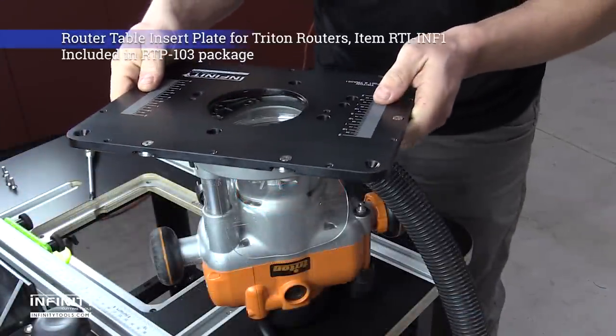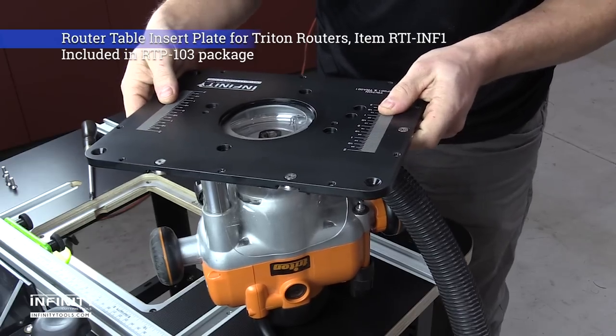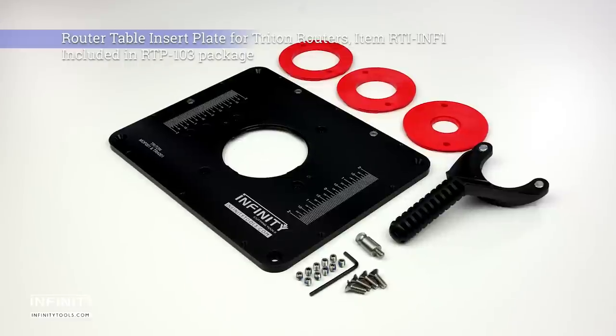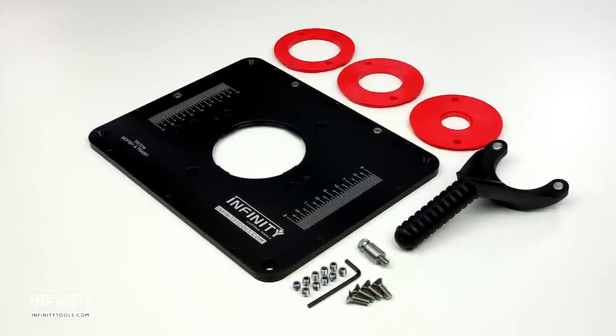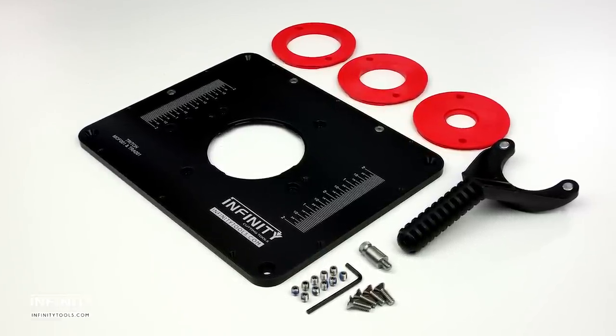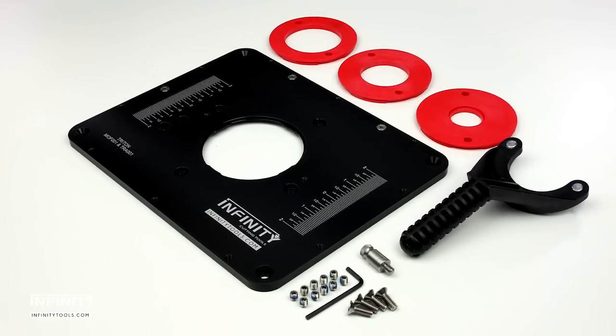The Infinity Router Plate is specifically designed to work with Triton routers, measuring 9-1/4 by 11-3/4 inches. It is made from 3/8-inch thick, 6000 series aluminum that is CNC machined to be perfectly flat and hard anodized for durability.